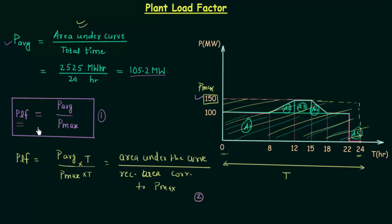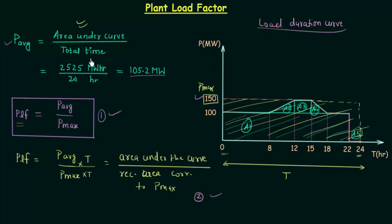In your exam you may have a problem based on the direct ratio formula or based on the area method, so remember both results. Now we will calculate the plant load factor for this particular load curve. Note that if you have a load duration curve in place of a load curve, you have to follow the same formulas. Here we have a load curve and we will find out the plant load factor. P average is equal to 105.2 MW and P max is equal to 150 MW.